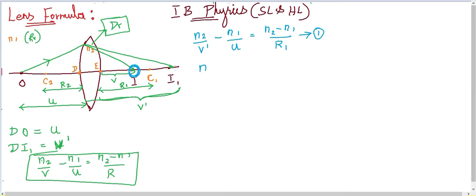Similarly, applying the same formula for the second surface, we write: n1/V − n2/V' = (n1 − n2)/R2. Let this be Equation 2.